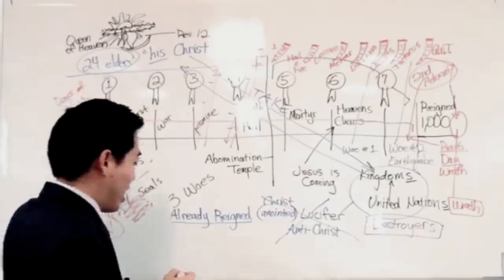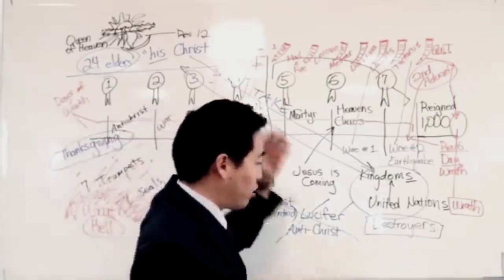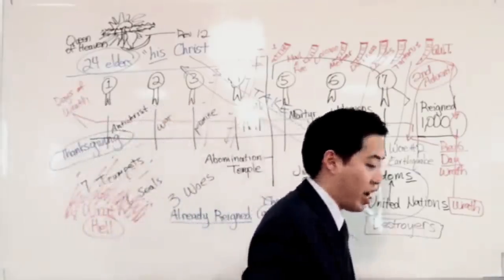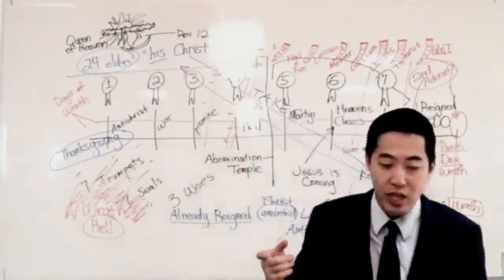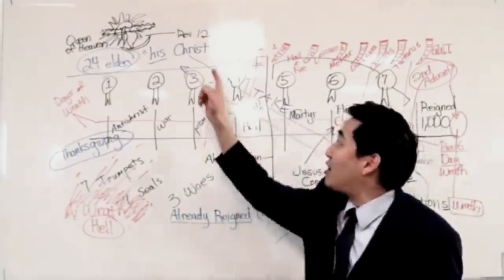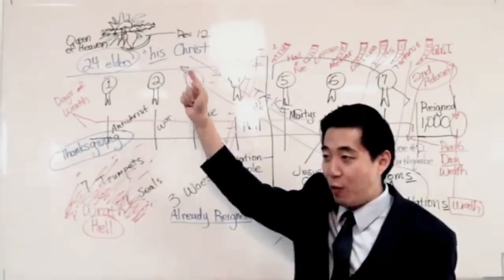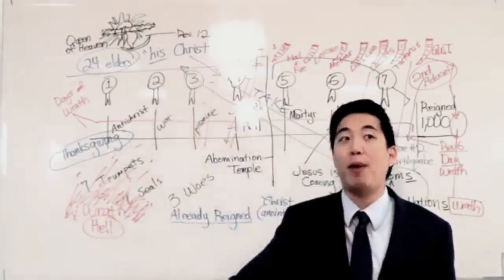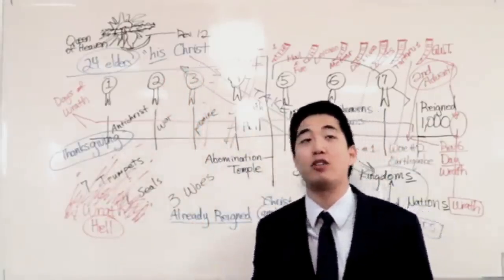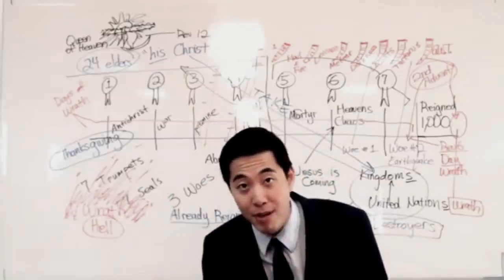Because they're going to look at Revelation 12, like there's this beautiful woman up in heaven and she's crowned. So they decorate these statues with the moon underneath her feet, the sun around her head, and et cetera.